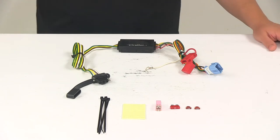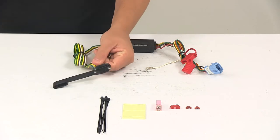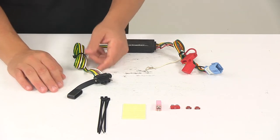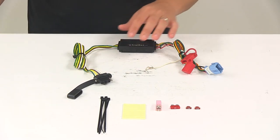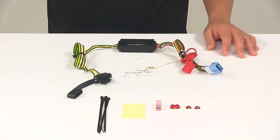Today we're taking a look at the Curt T-Connector Vehicle Wiring Harness with a four-pole flat trailer connector. This product fits certain years of the Honda Odyssey, so to ensure that this is a fit for your vehicle, you can always use the vehicle fit guide at eTrailer.com.